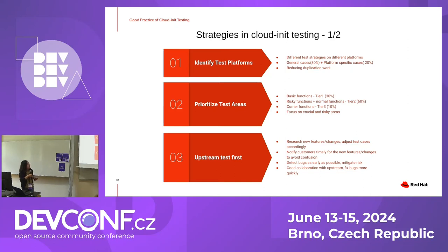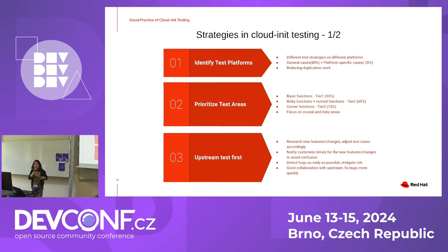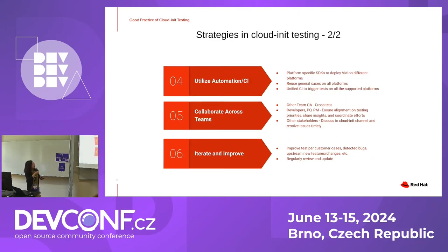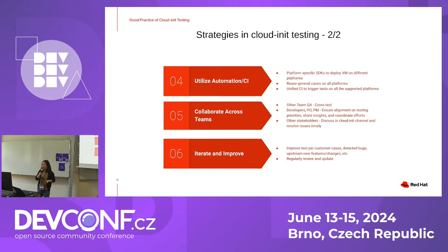The third strategy is upstream test first: we research and test every rebase and adjust our test cases accordingly, and we notify customers timely about new changes to avoid confusion. Testing upstream first helps detect bugs as early as possible and enables good collaboration with upstream to fix bugs quickly. The fourth strategy is to utilize automation and CI: automation is very important in software testing, and choosing a suitable automation framework is crucial. According to cloud-init requirements and challenges, we chose a lightweight automation framework named OS-test.